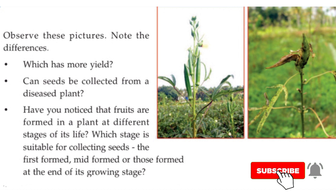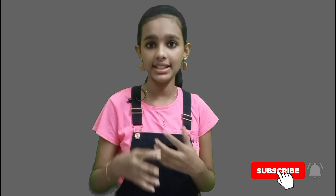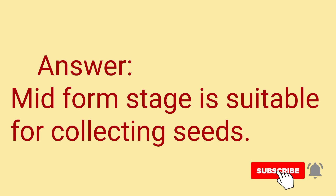The third question is: have you noticed that fruits form on a plant at different stages of its life? Which stage is suitable for collecting seeds — the first formed, mid formed, or those formed at the end of its growing stage? A plant's growing stage is divided into three: the first formed, mid formed, and those formed at the end. The mid formed stage is suitable for us to collect seeds.